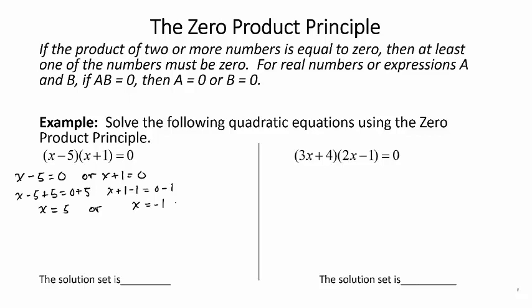Technically both of these should be solutions. We can check them by simply plugging in each one of them into the equation. So with x equal 5, I would say 5 minus 5 times 5 plus 1 equal to zero. So I have zero times 6, is that equal to zero? Yes, it is.